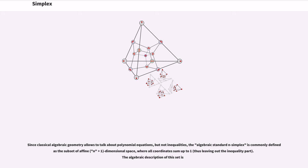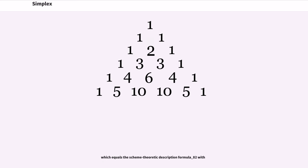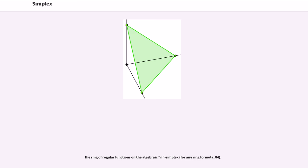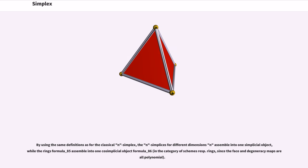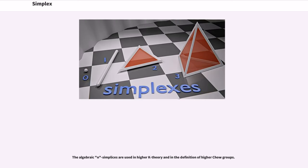Since classical algebraic geometry allows to talk about polynomial equations, but not inequalities, the algebraic standard n-simplex is commonly defined as the subset of n+1 dimensional space, where all coordinates sum up to one. The algebraic description of this set equals the scheme theoretic description with the ring of regular functions on the algebraic n-simplex. By using the same definitions as for the classical n-simplex, the n-simplices for different dimensions n assemble into one simplicial object, while the rings assemble into one co-simplicial object. The algebraic n-simplices are used in higher K-theory and in the definition of higher Chow groups.